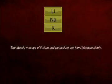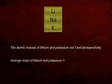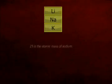So let's calculate the average atomic mass of lithium and potassium. That is 7 plus 39 divided by 2, which gives us 23. And 23 is the atomic mass of sodium.